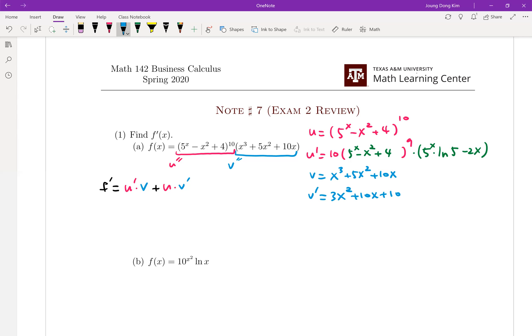Then we can plug everything into the product rule. u' is 10(5^x - x² + 4)^9 times (5^x·ln(5) - 2x). That is u' times v, where v is x³ + 5x² + 10x. Plus - because we're using product rule - we need u, which is (5^x - x² + 4)^10.